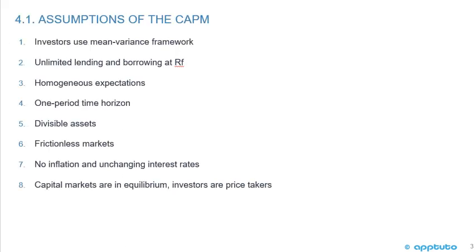Assumptions of the CAPM. One, investors use a mean-variance framework — that means return-to-risk, where mean is average return and variance is risk, which we've seen graphed many times: return on the y-axis, risk on the x-axis.